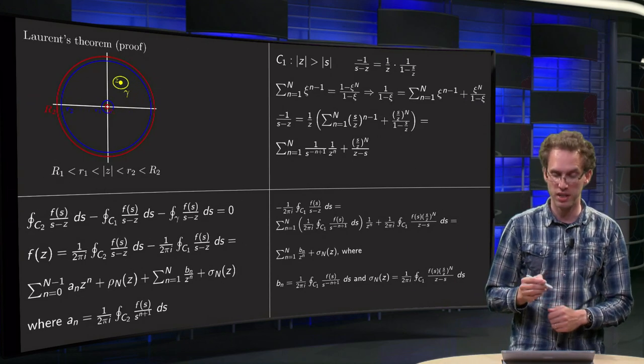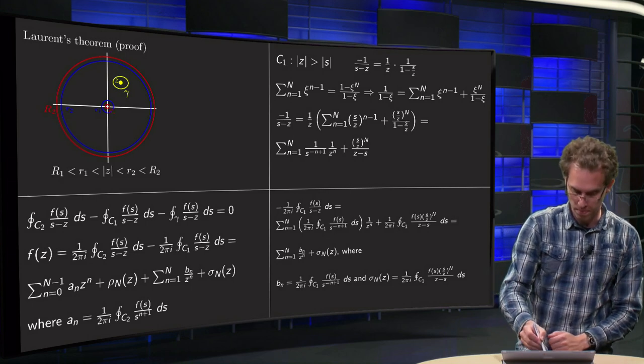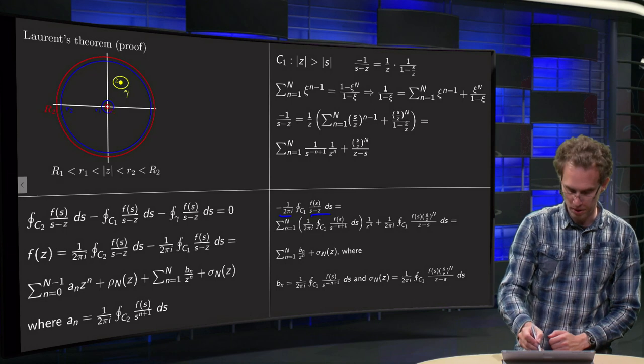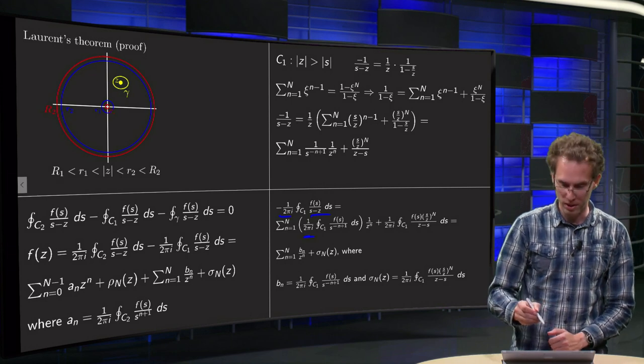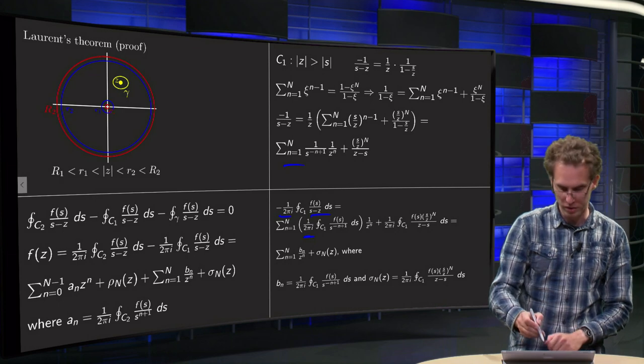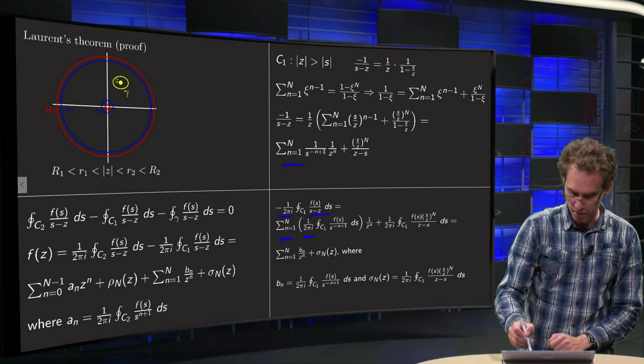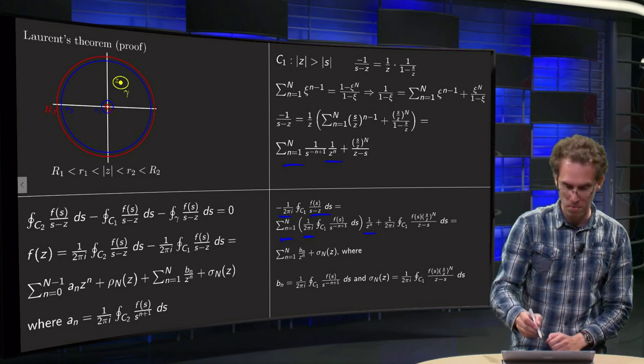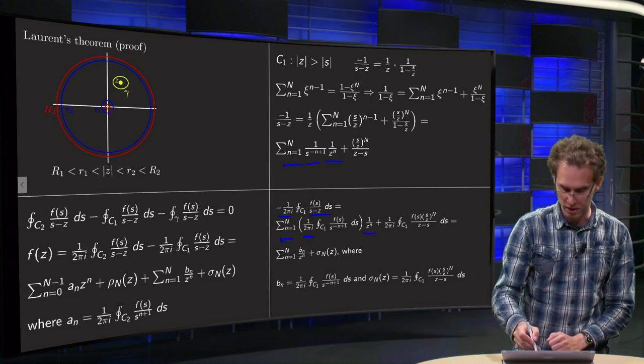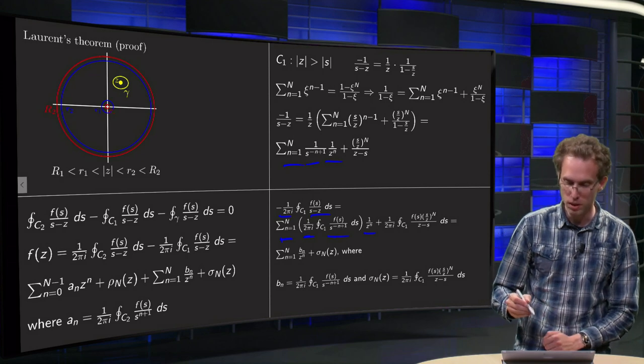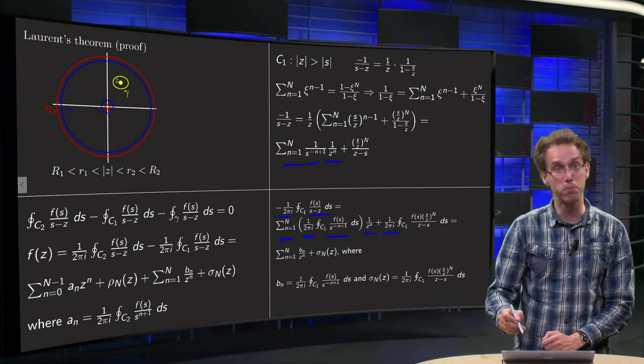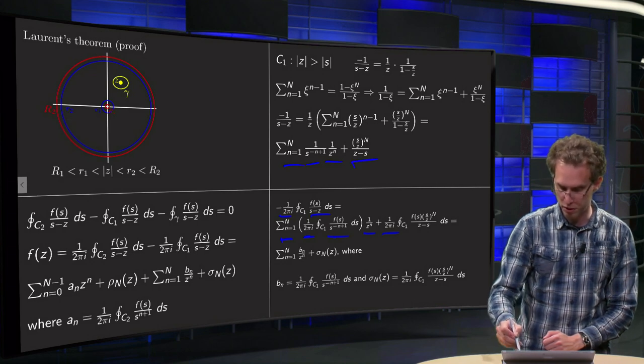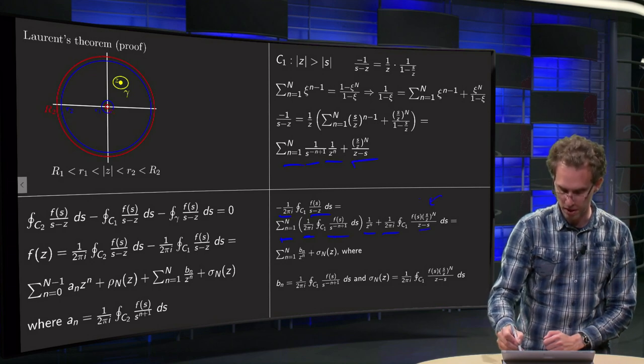And then we can rewrite the integral. The -1/(2πi) times this integral equals, well you just plug in the 1/(2πi), you can take this sum out because it's a finite sum, so you can always take it out. You have a 1/z^n, it's not dependent of the integral, and a s^(n-1) which comes here, plus again a 1/(2πi) and then the integral of this part over here times f(s) along C1.